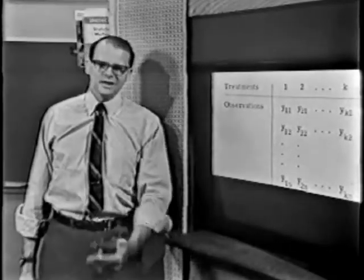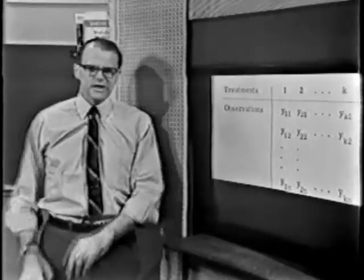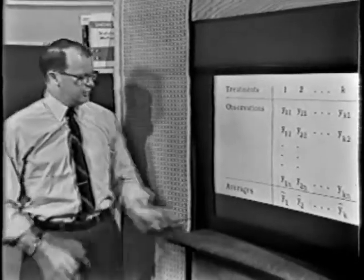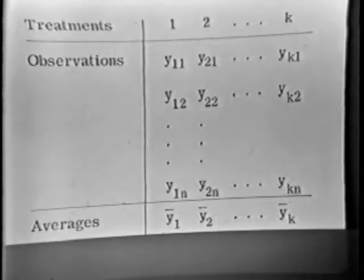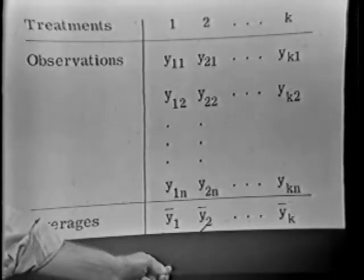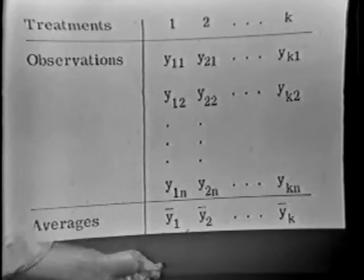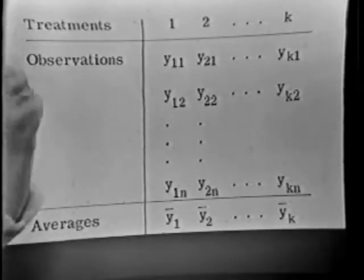About this time, someone says, for crying out loud, let's see what the averages are. And so we quickly would calculate the averages and look at them. And so there'd be K averages. And now the arguments would start all over again. Treatment two or plastic number two is really better than all the other plastics because its average is higher than all the other averages. And the other engineer says, don't be silly because some of the observations in treatment one are larger than that average in treatment two. And so it is generally when engineers get together and try to appraise data in company.